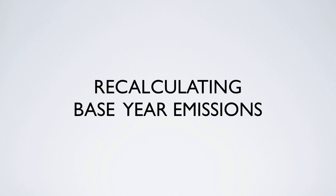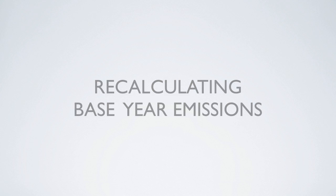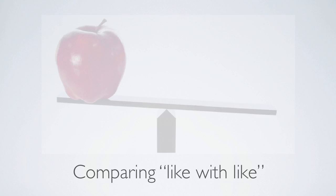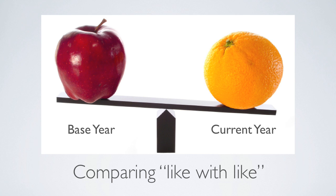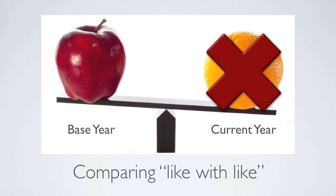Re-calculating base year emissions. Since the base year is used for tracking and comparing emissions over time, it is important to make sure that these comparisons are meaningful and consistent. In other words, we need to make sure we are comparing like with like. Greenhouse gas inventories have a number of variables which can change over time, making comparisons to the base year inaccurate and sometimes even deceiving.